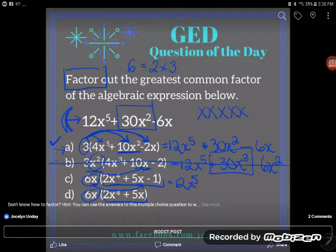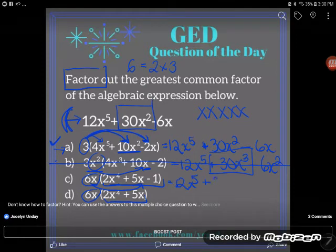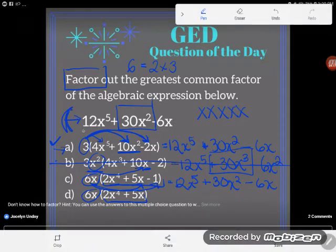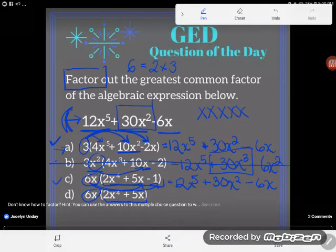Now let's pass 6x out to my next term, positive 5x. 6 times 5 is positive 30, and x times x is x squared. And then I will multiply 6x by my last term, negative 1, and I'll get negative 6x. This guy also checks: 12x to the fifth power plus 30x squared minus 6x. This is a possibility.